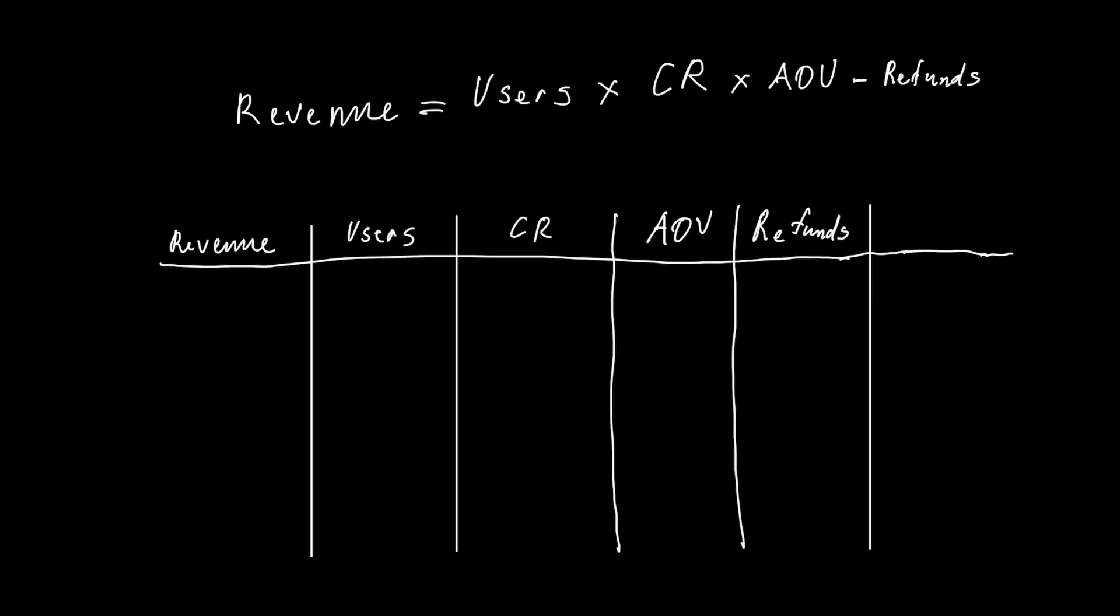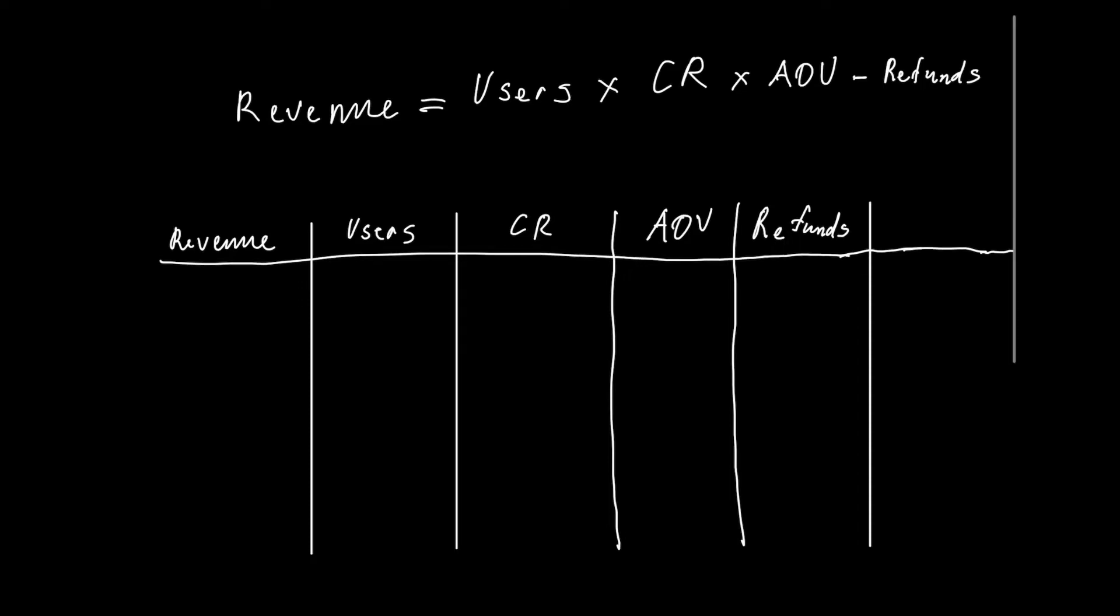Let's assume that we get an e-commerce store and we got 100k users per month with the conversion rate 2% and average order value $100 and refunds is $10k. It means that based on these numbers our e-commerce store generates $190k in revenue.